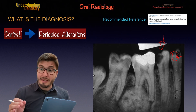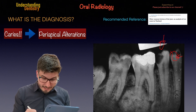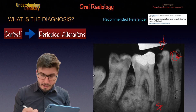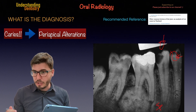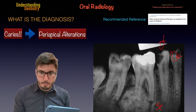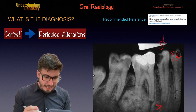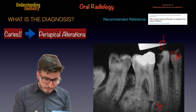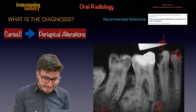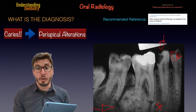We have periodontal ligament space widening. So let's understand that we do have periapical alterations here. Even in the first premolar we have this as well, and then our very big mixed periapical lesion.